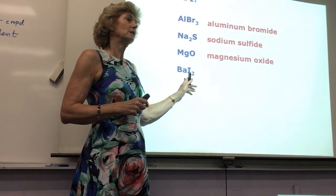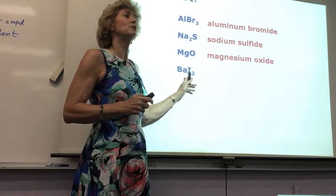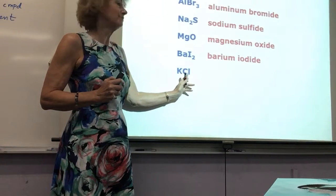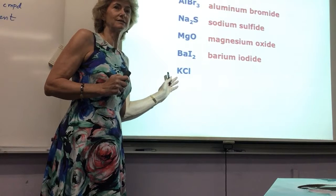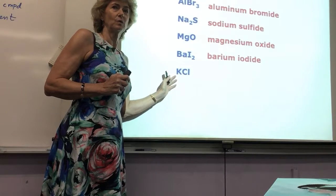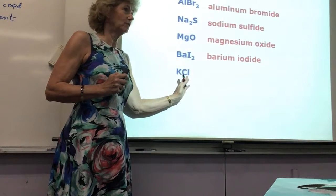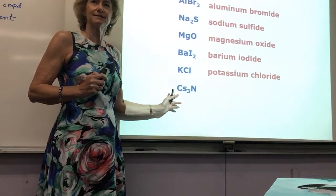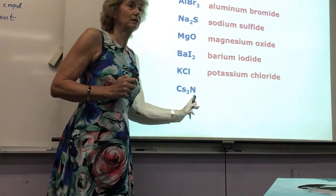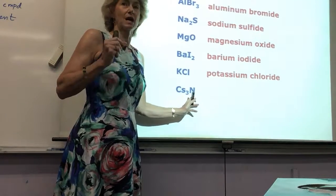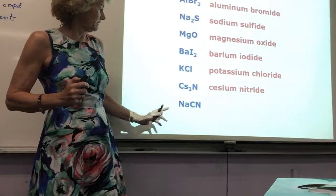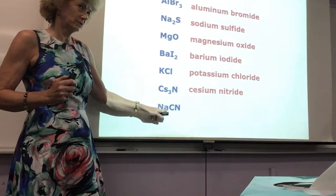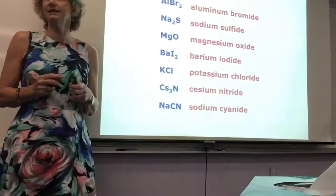Barium iodide. Not iodine, iodide. Potassium. What is the charge on each of these? Positive one and negative one. Chloride is always negative one. Cesium, this one's tough. Nitride. Not nitrogen, nitride. It's the ion. And finally, this one's hard. It's called cyanide, so sodium cyanide. Good.